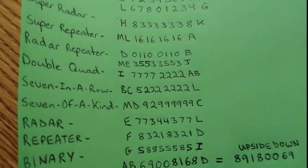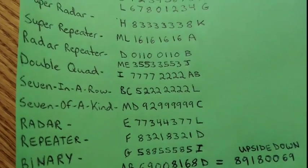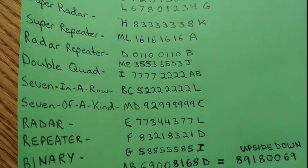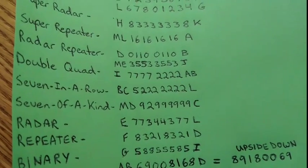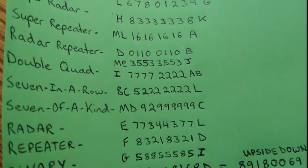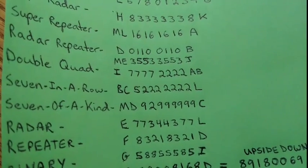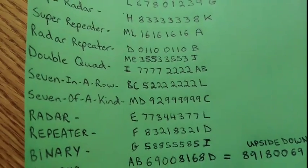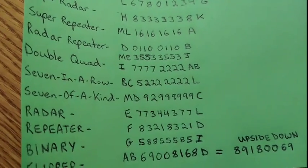A radar repeater looks like 0, 1, 1, 0, 0, 1, 1, 0 — another example would be 3, 5, 5, 3, 3, 5, 5, 3. Then we have the double quad, which is something like 7, 7, 7, 7, 2, 2, 2, 2.